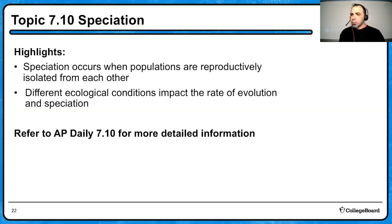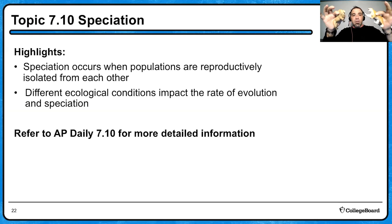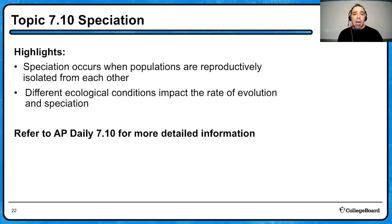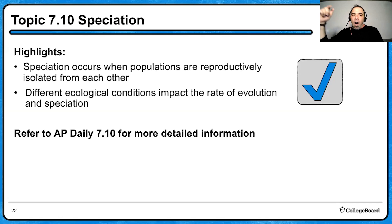When we talk about speciation, I have a lion and a tiger here — different species. If we created a phylogenetic tree, at some point there'd be a common ancestor. Speciation occurs when populations are reproductively isolated from each other, and different ecological conditions impact the rate of evolution and speciation. If organisms cannot successfully reproduce, that can lead to isolation and then speciation. Refer back to 7.10 for more detailed information if you're struggling.